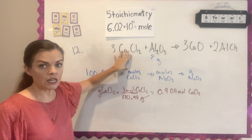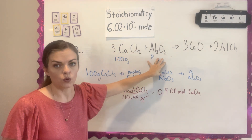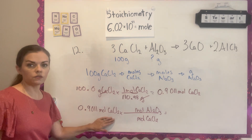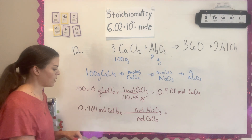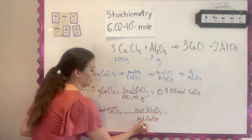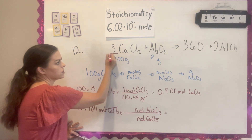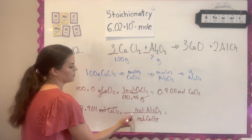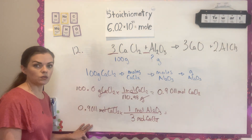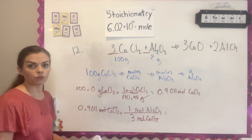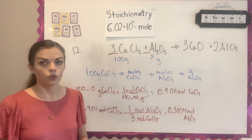Now using the coefficients from the equation to go from moles of CaCl2 to moles of Al2O3. Starting with moles of CaCl2 on the bottom so they cancel, and the coefficients are 3 for CaCl2 and 1 for Al2O3. Calculating 0.9011 ÷ 3, you get 0.3004 moles of Al2O3.